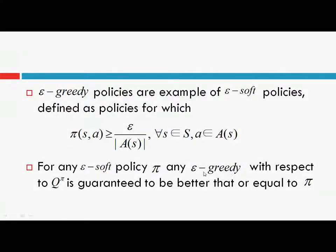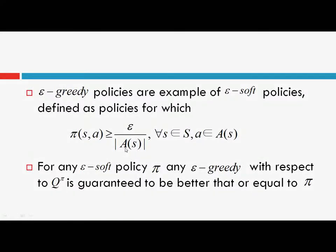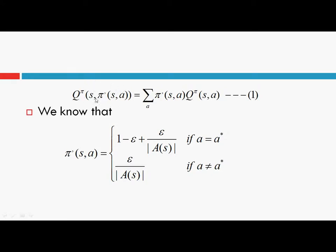Any policy that is epsilon-greedy with respect to the action value function for an epsilon-soft policy pi is guaranteed to be better than or equal to pi. Here is a proof of this statement. This expression denotes that in state s, you are selecting an action according to policy pi-dash. Pi is the epsilon-soft policy and pi-dash is the epsilon-greedy policy. In state s, you select an action according to the epsilon-greedy policy, transition to the next state, and then select actions according to policy pi.